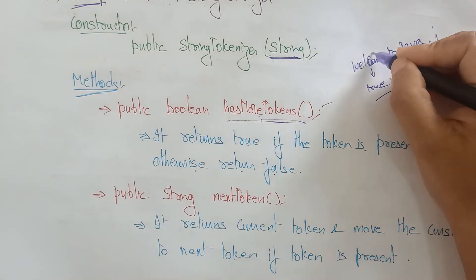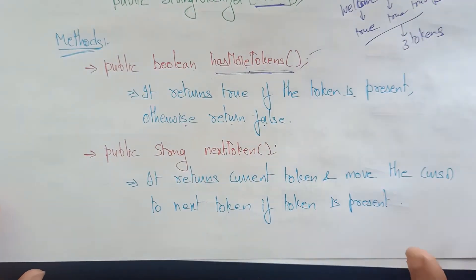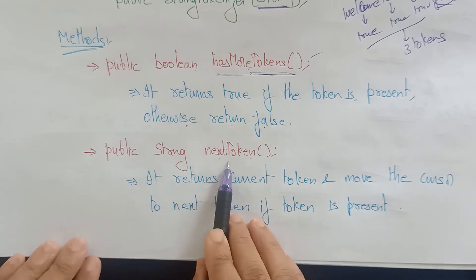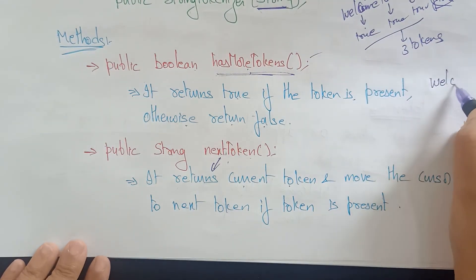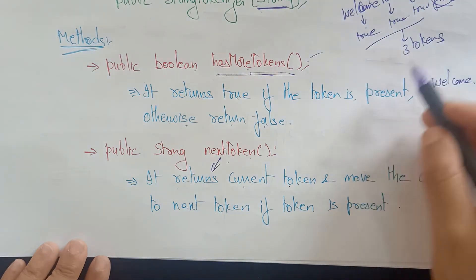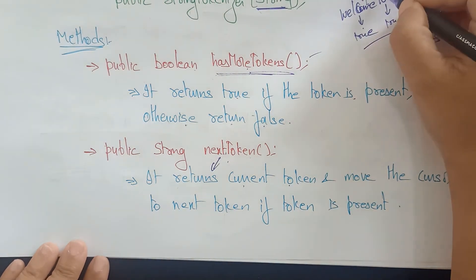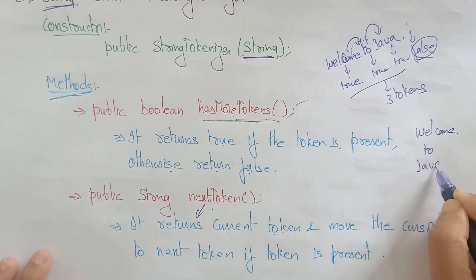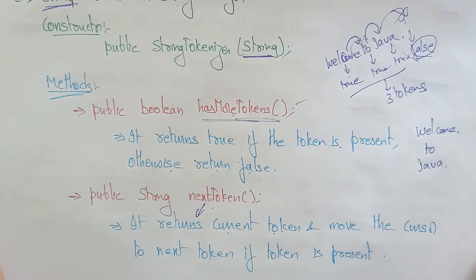The second method is: public String nextToken(). This returns the current token and moves the cursor to the next token. So it returns 'welcome' and moves to 'to', then returns 'to' and moves to 'java', then returns 'java' and moves to the next — but if hasMoreTokens() returns false, there's no more token.